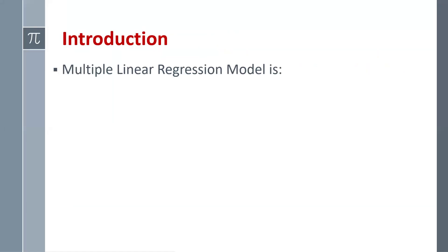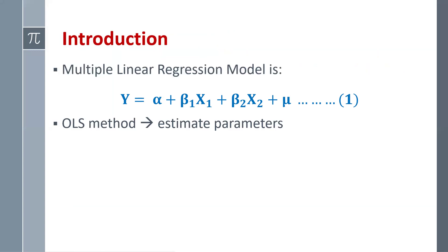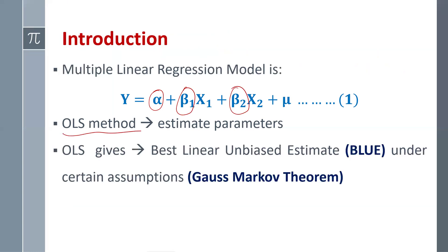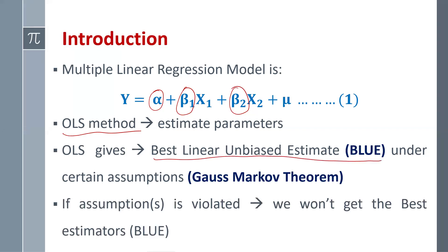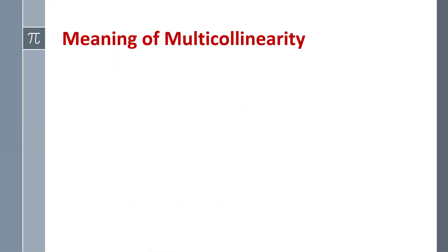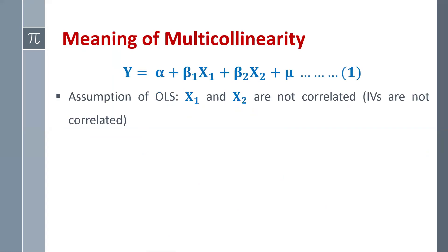The idea of multi-collinearity is associated with the multiple linear regression model. Suppose our model is: Y = α + β₁X₁ + β₂X₂ + μ. We estimate the parameters — regression coefficients α, β₁, β₂ — through the OLS method, which gives the Best Linear Unbiased Estimator (BLUE). If some assumptions are violated, we won't obtain BLUE through OLS. In our regression model, we assume that X₁ and X₂, our independent variables, are not correlated.